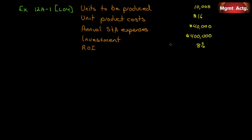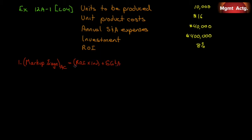It always helps to remind ourselves how we do that. What is the formula? We're looking for the markup percentage — I'll label it AC for absorption costing so we won't be confused when we get to the variable costing question. You'll recall the amount of money we need to make is our ROI times our investment. For absorption costing, remember, all of our manufacturing costs are in the price, so we have to cover all the non-manufacturing costs — SG&A — divided by the number of units times the cost per unit.